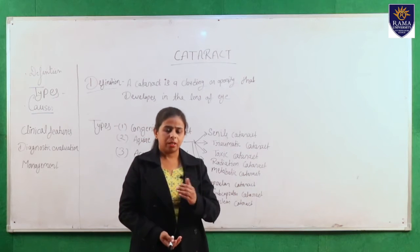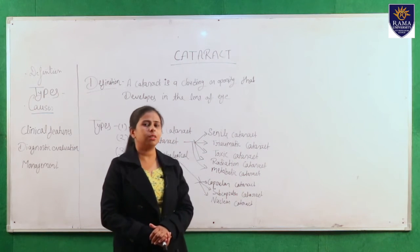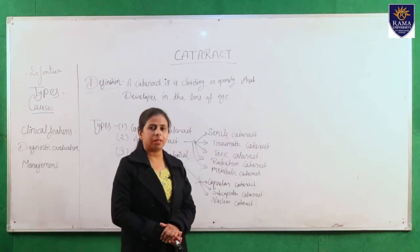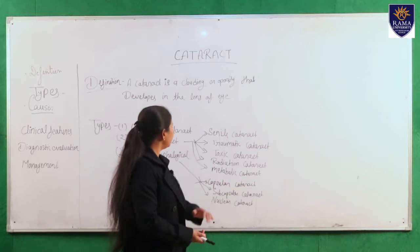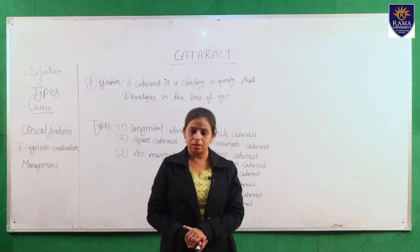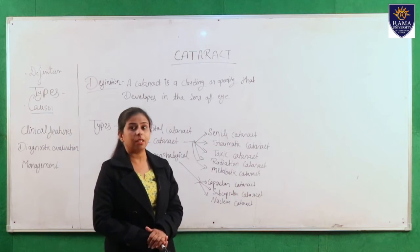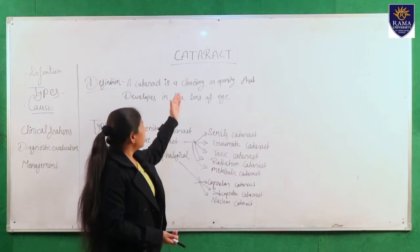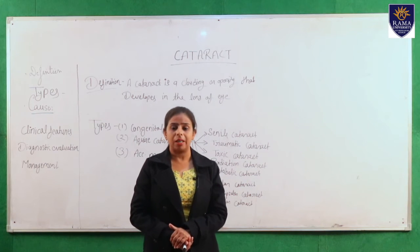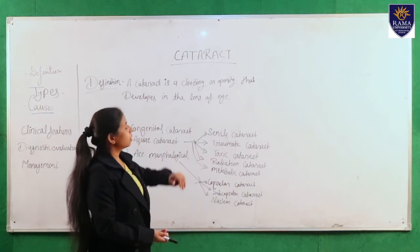Next is radiation cataract. If any person comes in contact with radiation like UV rays, this type of cataract can occur. Next is metabolic cataract. This type of cataract can occur due to any metabolic disease like diabetes mellitus. Cataract is a complication of diabetes mellitus.